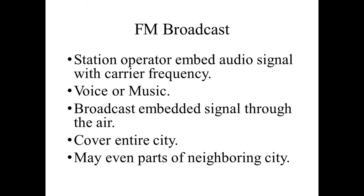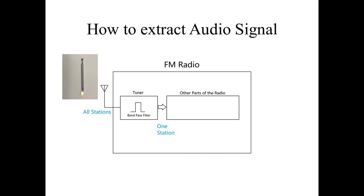The radio signal can cover the entire city and even parts of neighboring cities as well. Now, how do we extract the audio signal? This is the function of FM radio. First, there is an antenna — it can be a piece of wire, say 3 feet, or a metal rod. The antenna receives all radio frequencies in the air. We then need a tuner to select the particular station we want to listen to. This is done by a bandpass filter, which lets a small range of radio frequency signal go through while rejecting all others. Changing the value of this bandpass filter will change the station we listen to.